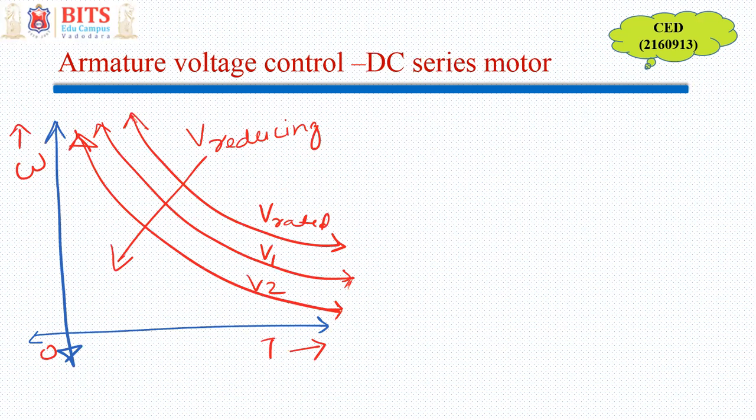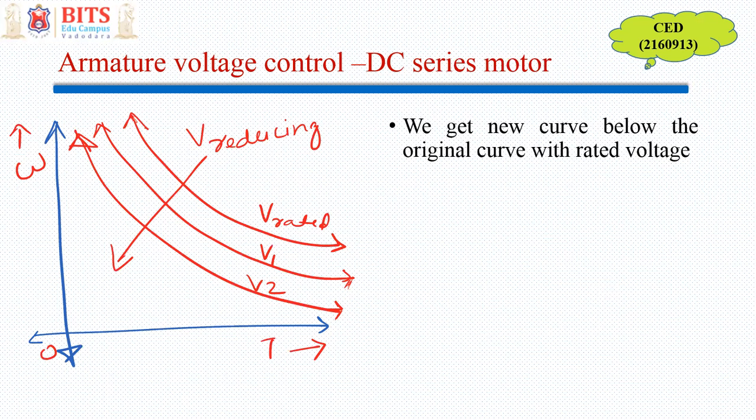DC series motor - this is the characteristics. So original characteristic is with rated voltage. You get characteristics parallel to and below the one which is rated voltage with this method. So this way you can see that DC series motor also you can have armature voltage control.